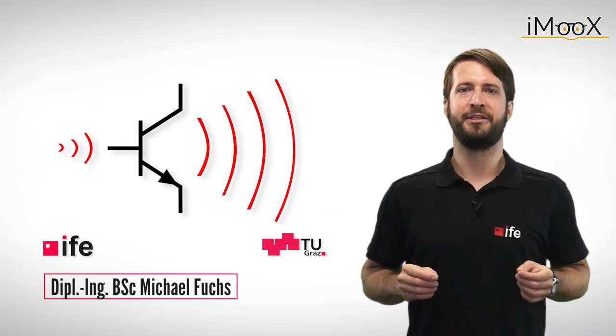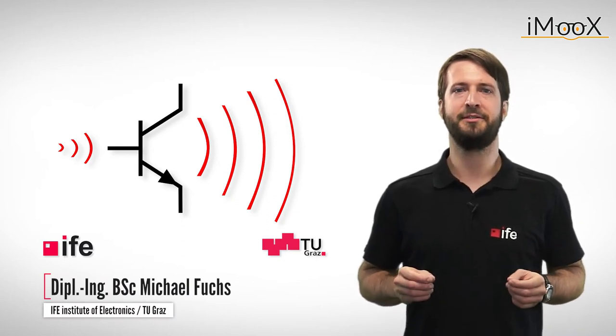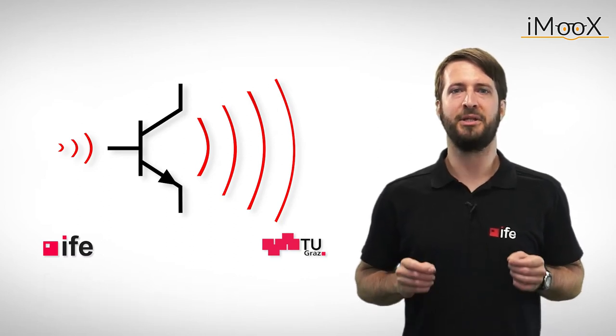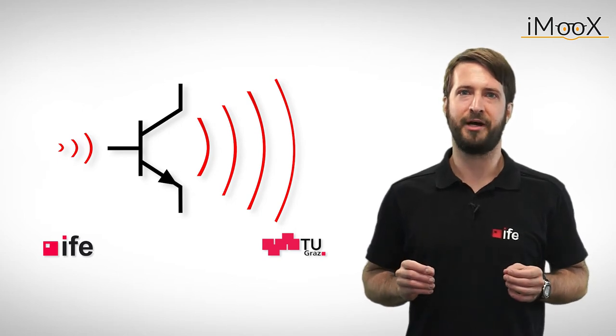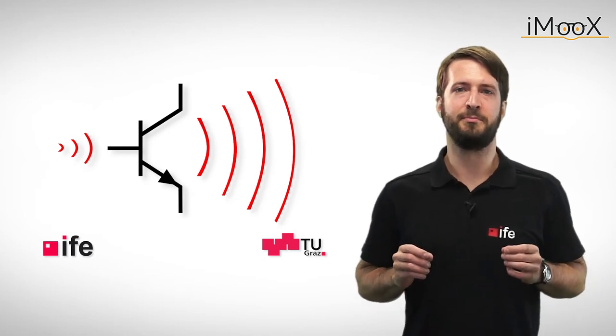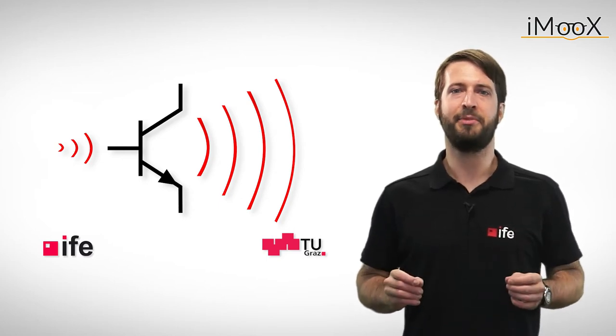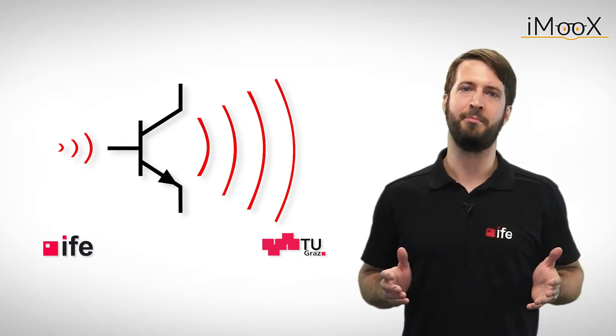In our last video we looked at the basic functionality of a bipolar transistor and explained a short design example of an AC coupled emitter follower. But if we want to fully understand the complex behavior of transistor amplifiers, we have to go a little bit more into detail. So stay tuned as we go a level deeper and address the limitations of transistor amplifiers and find out how to cope with them.